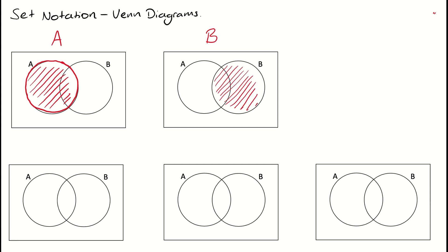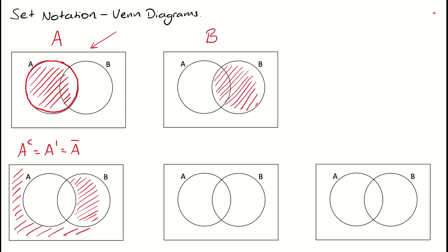Now remember we've got these things called complements. The complement of A, which is sometimes written as A prime or A with a hat or a dash on top — here I'm interested in everything except for A, so we're looking at A not occurring. If I look at my Venn diagram which represents A and I want anything that's not there, I just need to mirror that Venn diagram and shade in anything that's not A. So all of that little bit in B and the shaded space around the outside would be the complement of A.